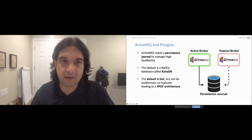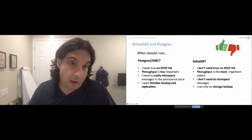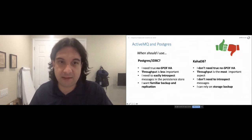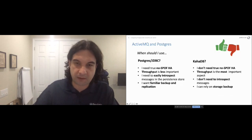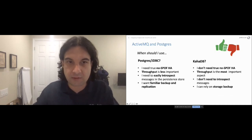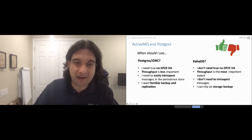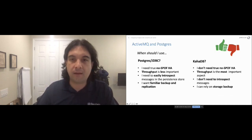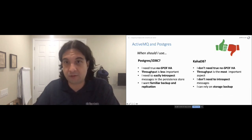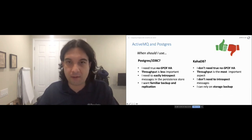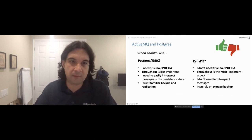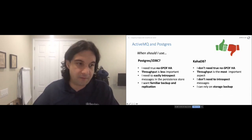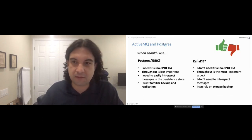In situations that require true no-single-point-of-failure architecture, integrating with Postgres makes sense. Also, some people like to easily introspect messages in the persistence store — with KahaDB you need tools like strings to introspect the extents, whereas with JDBC you can use standard SQL statements. Some DBAs also object to a new unfamiliar database backing ActiveMQ — they want JDBC because it's familiar and fits into existing database farms with known backup and replication procedures.